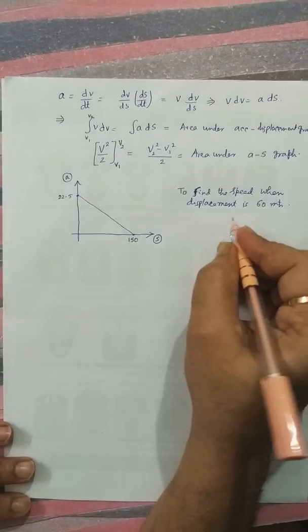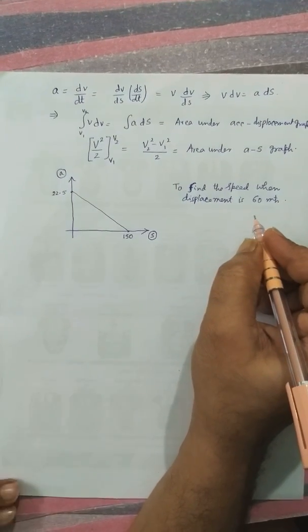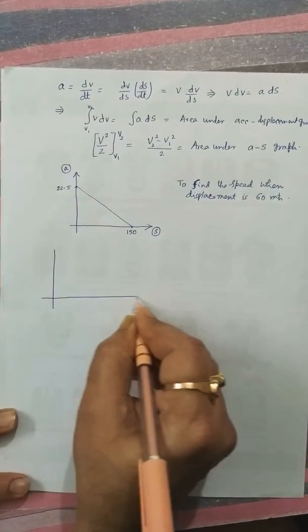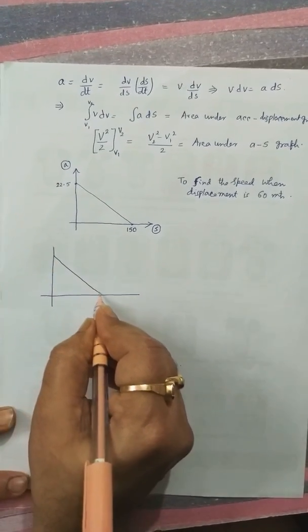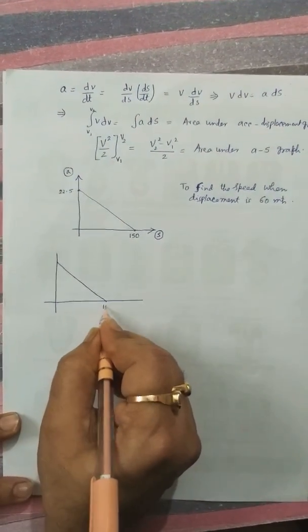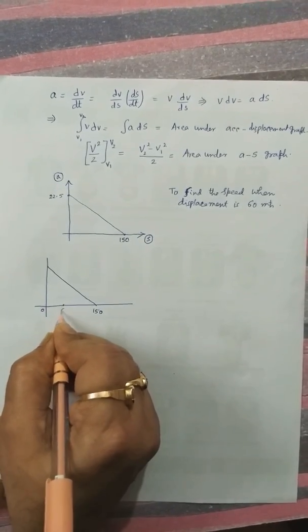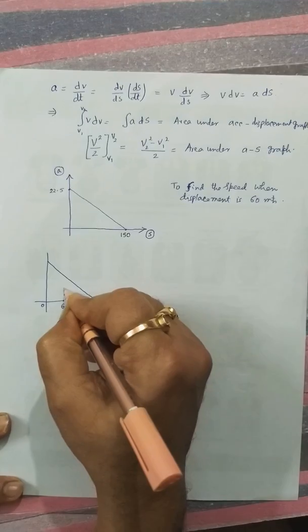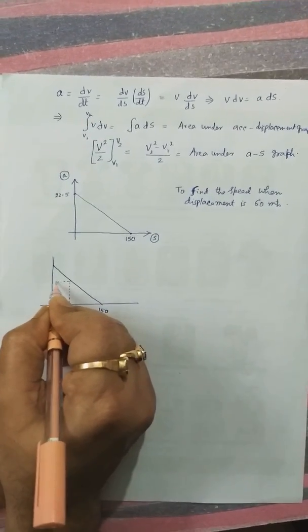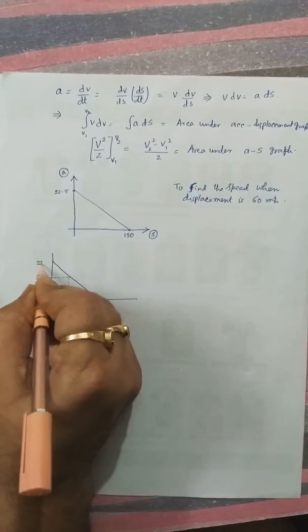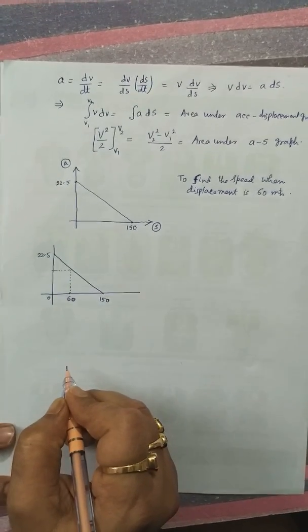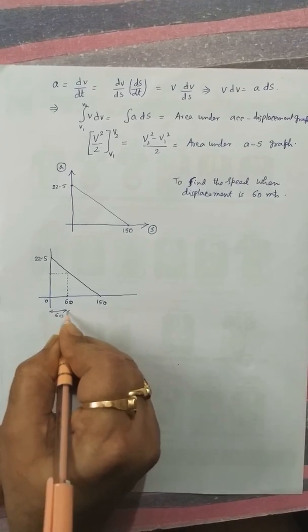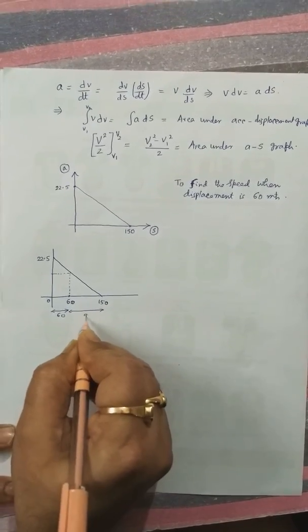We can follow two methods. One is simple graph method. Let us take this graph as a very simple triangle. It is 150 and when displacement is 60 we have to find out what is the corresponding acceleration.